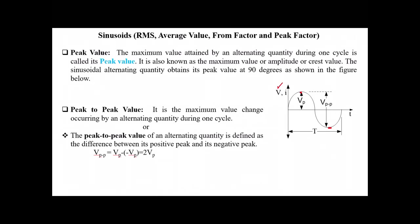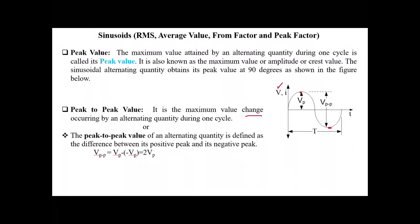Peak to peak value is the maximum value change occurring in an alternating quantity during one cycle. It is defined as the difference between its positive peak and its negative peak.